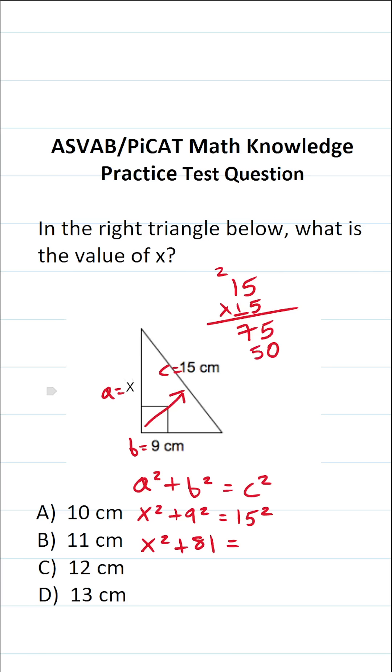1 times 5 is 5. 1 times 1 is 1. Let's add all this up. This is 5. 7 plus 5 is 12, carry a 1. 1 plus 1 is 2. So this becomes 225.